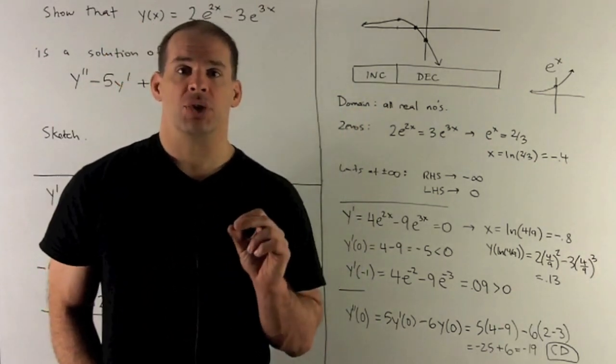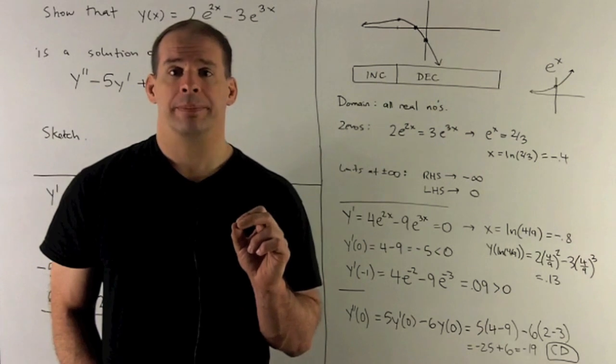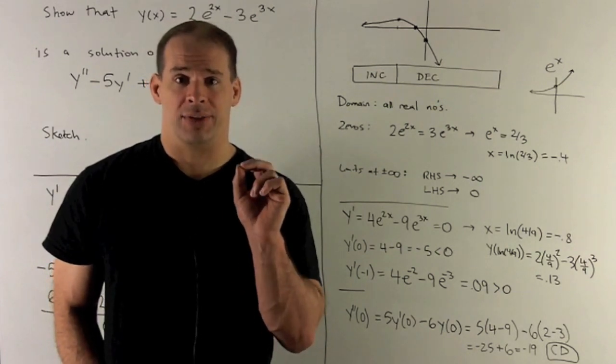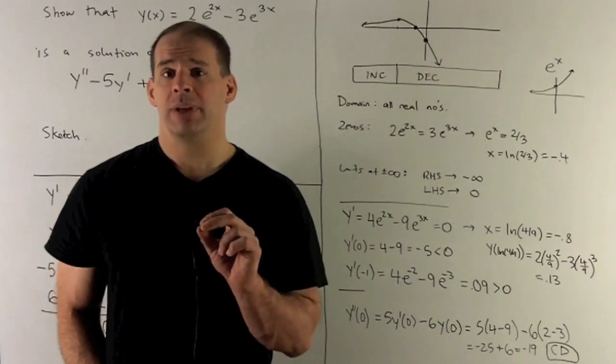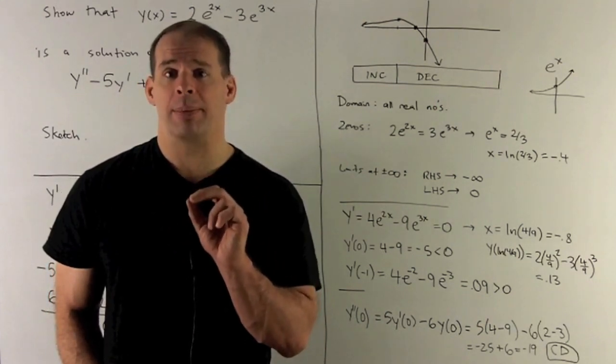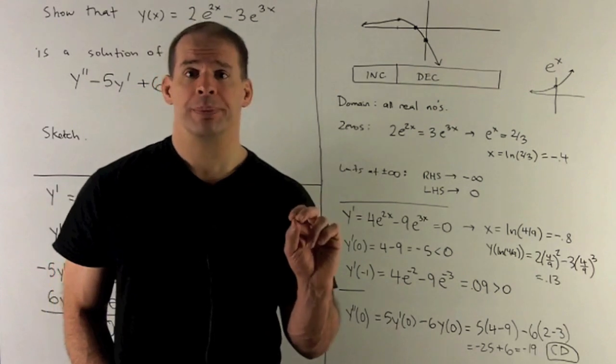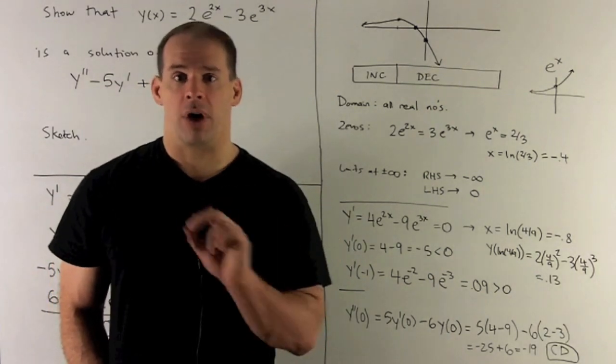How about on the right? So as we go off to plus infinity. Here we're going to compare e^(2x), e^(3x). We draw the pictures. e^(3x) is going to be on top as you get large. So e^(3x) is going to dominate in our function.